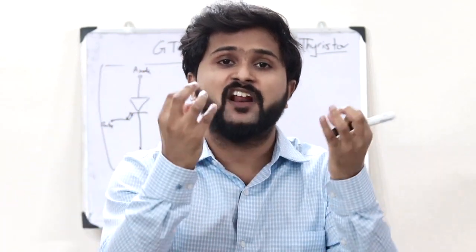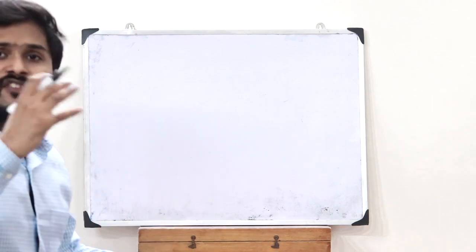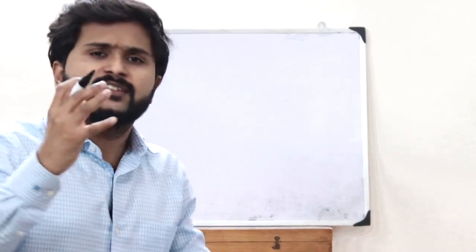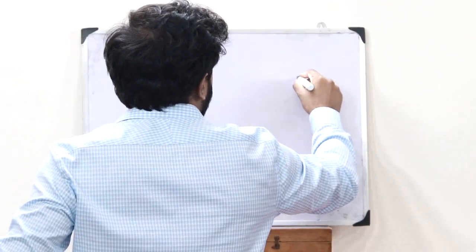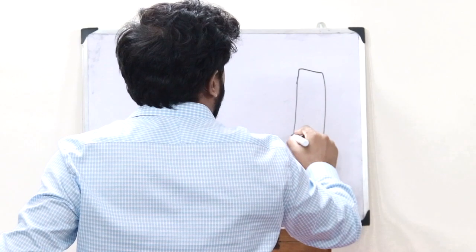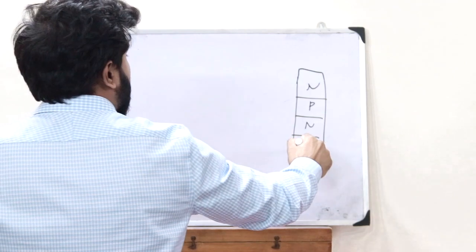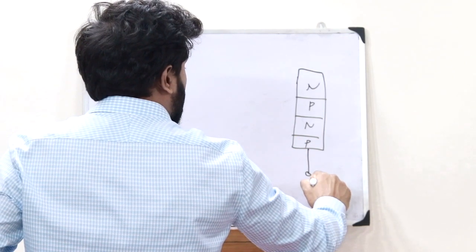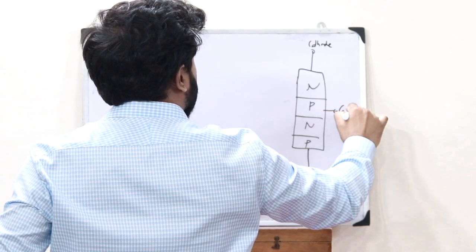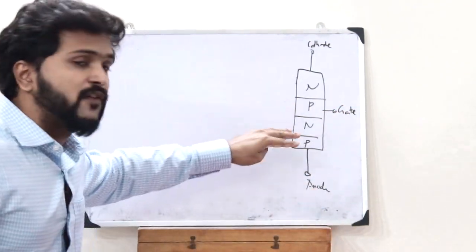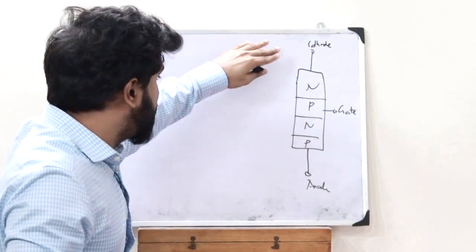Now let us see the actual structure of a GTO or Gate Turn Off Thyristor. The structure of a Gate Turn Off Thyristor is somewhat similar to a normal thyristor, which consists of four semiconductor layers with alternative P, N, P, N semiconductor layers, where this is the anode, this is the cathode, and this is the gate.